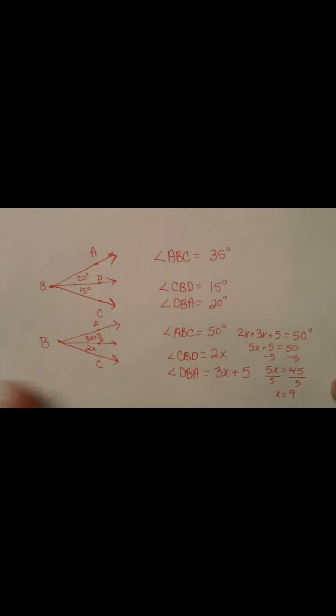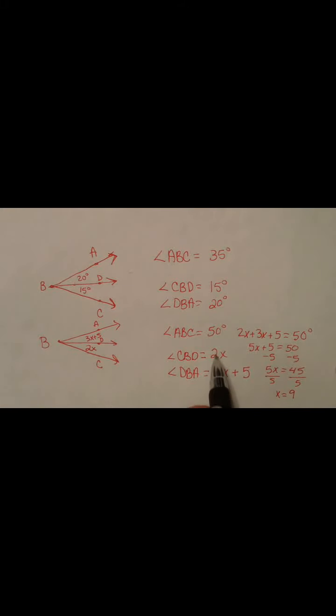So, once we find that X equals 9, we can just plug that 9 back into this to find out that the measure of CBD is actually 18 degrees. And we can plug it back in here. That would be 27 plus 5, which is going to be 32 degrees. So, that is the angle addition postulate.